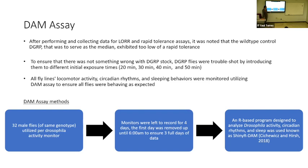We also collected locomotor activity and circadian rhythms using the DAM assay, just to make sure all of our genotypes were behaving as expected. In the DAM assay, there are 32 flies in each monitor of the same genotype, all male. Monitors were left to record for four days, and we cut off anything before 6 a.m. on the first day to have three full days of data, and then plugged it into Shiny R-DAMP.